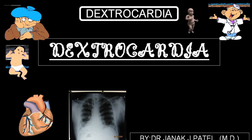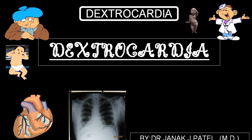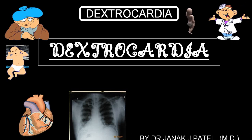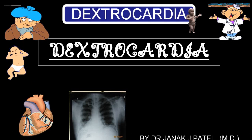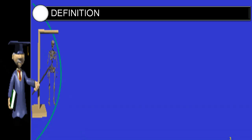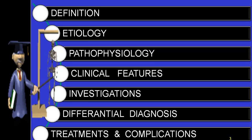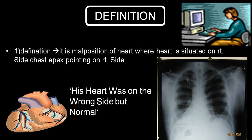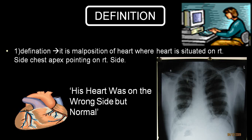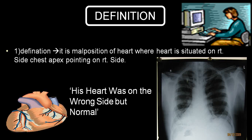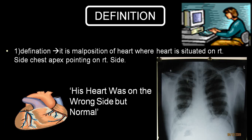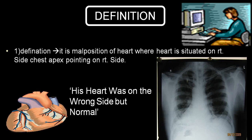Today we'll be discussing a topic which is one type of congenital heart disease. We call it dextrocardia. The definition of dextrocardia: it is a malposition of the heart where the heart is situated on the right side of the chest and the apex is pointing towards the right side.